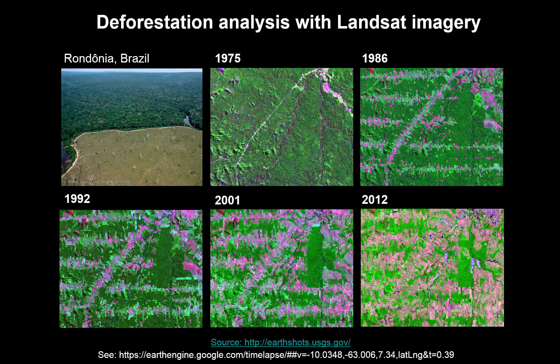The primary cause of this deforestation is conversion to cropland and pasture, but the reasons for this conversion are varied and remote sensing cannot directly tell us a lot about that. An interactive version where you can expand the view is available at this link, which is worth doing as it gives you a feel of the scale over which the deforestation occurs.